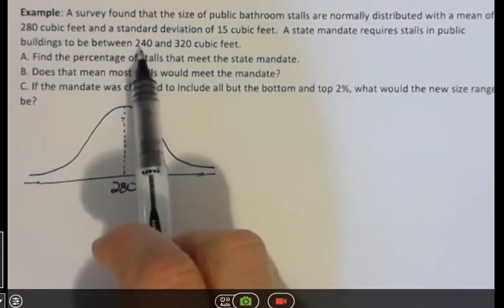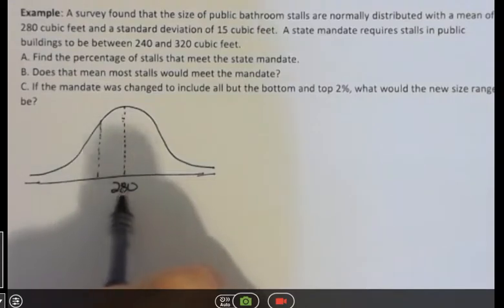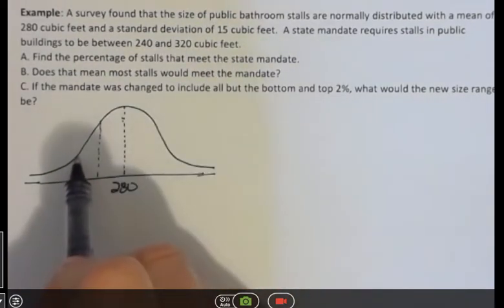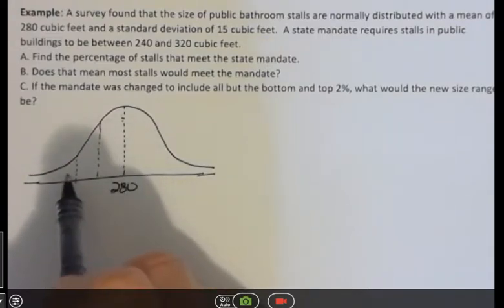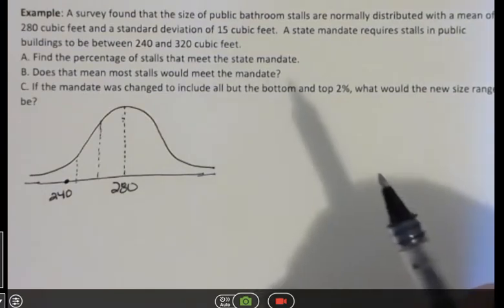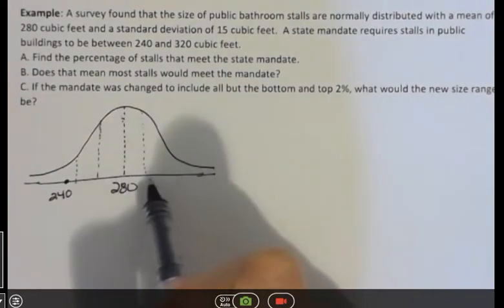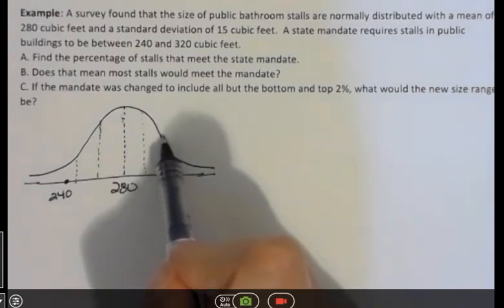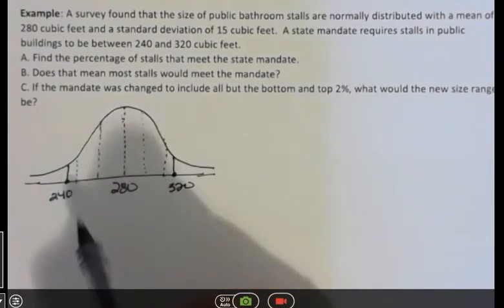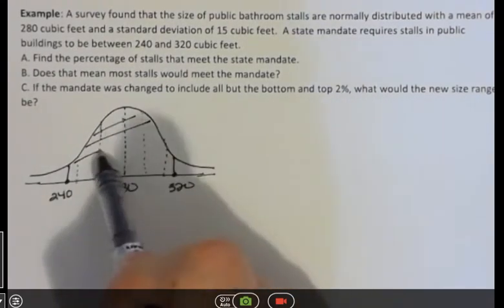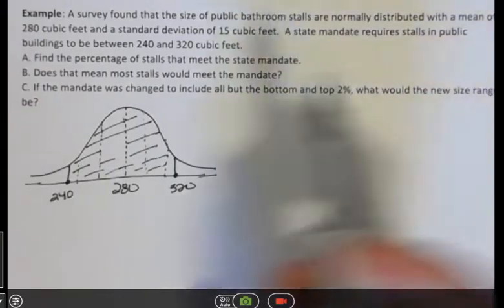There's a new law that says it has to be between 240 and 320. So if we went one standard deviation back, that would be 280 minus 15 or 265. And if we went another one back, we'd be at 240. Is that correct? 280 minus 30 would be 250. Sorry. So 240 is somewhere over here. And then we have up to 320. So if we went from 280 over one standard deviation, I didn't draw that very well. That'd be 295 and then over to 310. And we're up here at 320. So we want to know what is the probability, the percentage, which is the probability that we're talking about here. What percent of the state public bathrooms as they stand would meet the state mandate? So we're looking from 240 to 320.